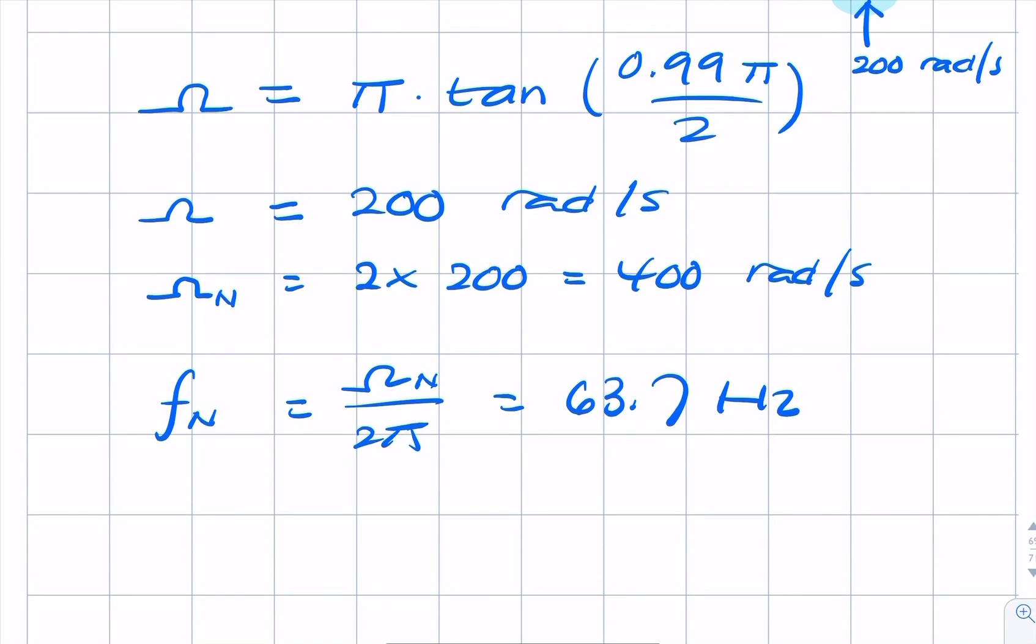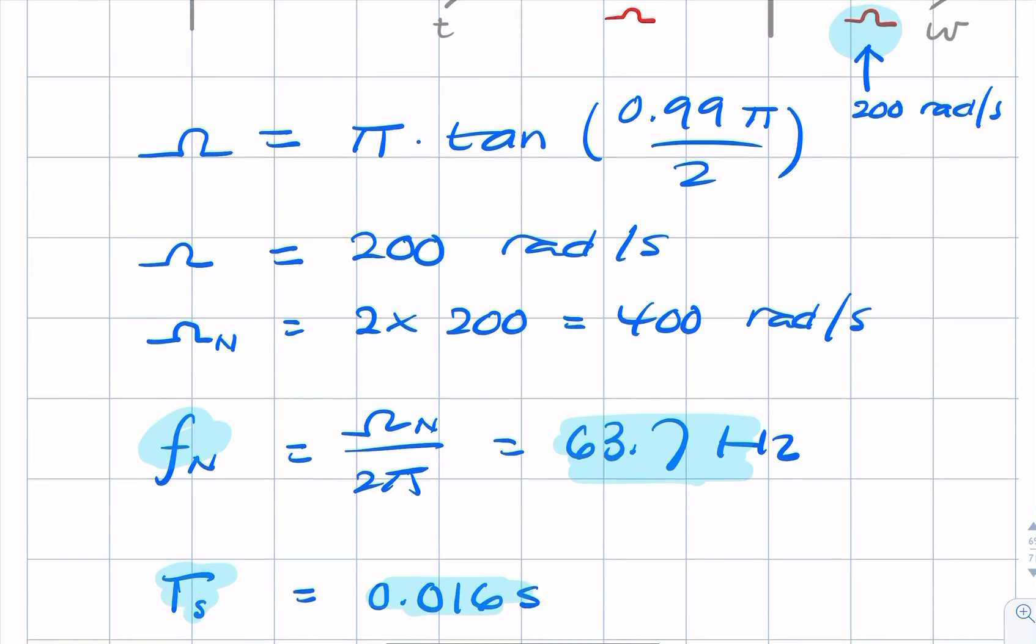And that will give you 63.7 hertz. So that means that our samples will be 1 divided by 63.7 seconds apart. So the time between samples, if we were to sample at the Nyquist rate, would be 0.016 seconds apart.